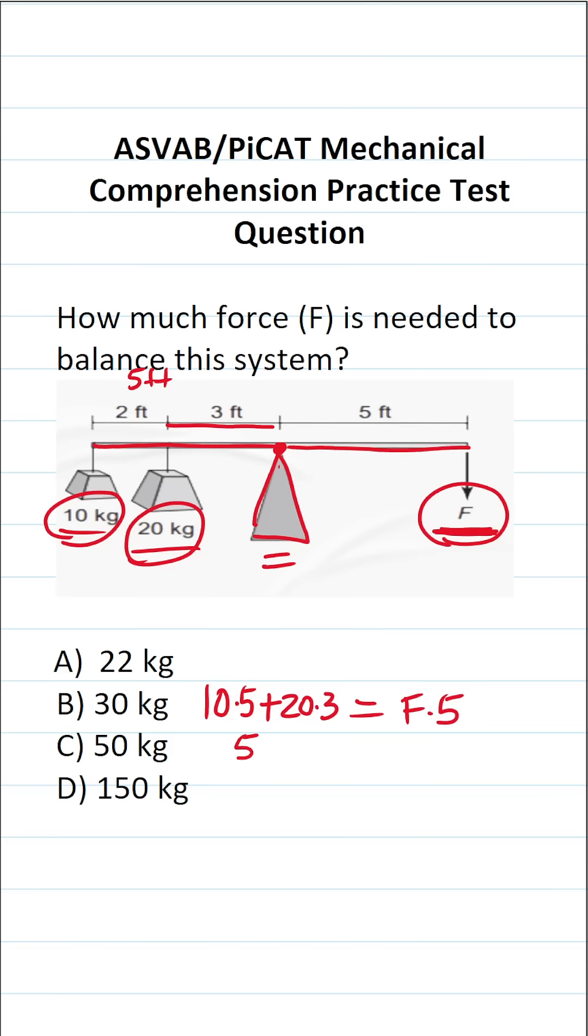10 times 5 is 50. 20 times 3 is 60, equals 5 times F is just 5F. So all we have to do is solve this equation for F now. 50 plus 60 is going to be 110, equals 5F. Let's go ahead and divide both sides by 5 to get F by itself. This crosses out, leaving us with F over here.